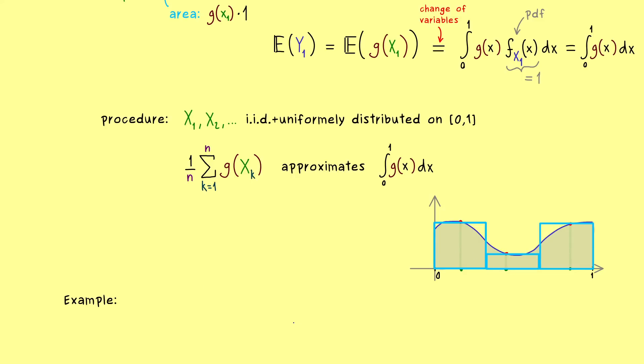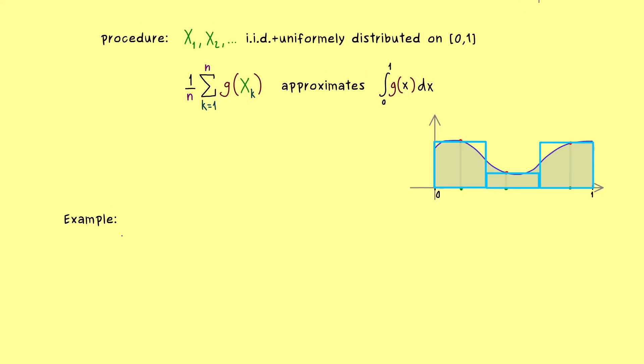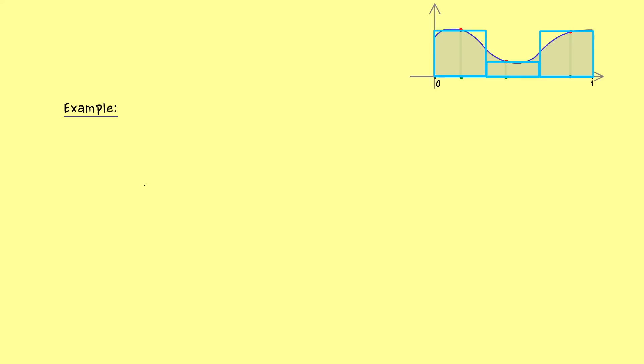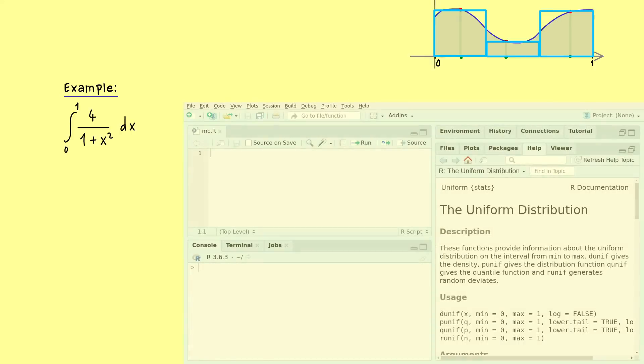Okay, now in order to finish this video I would say we can also look at a quick example. And there I want to integrate the function given as 4 divided by 1 plus x squared. And we want to have it from 0 to 1 as always. And you see this is definitely an integral you can solve by hand. However, now we will do it in R Studio by using the Monte Carlo integration.